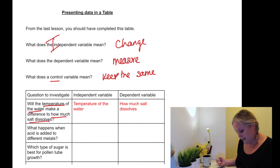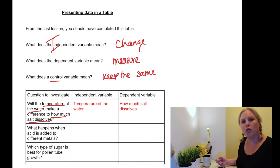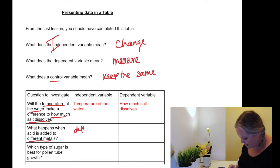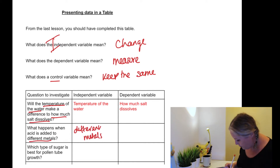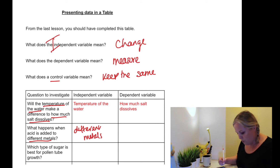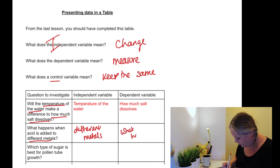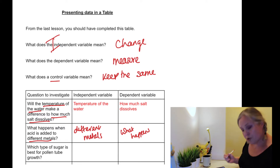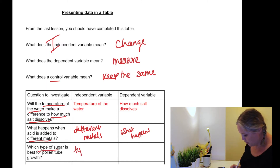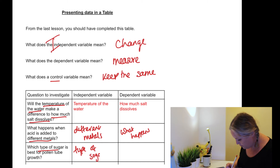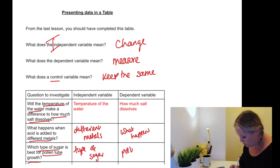What happens when an acid is added to different metals? So what are we going to change? We're going to change the different metals, and what will we measure? We'll measure the observation — what will happen. And what type of sugar is best for pollen tube growth? So I'm changing the type of sugar, and what am I going to measure? The pollen tube growth.